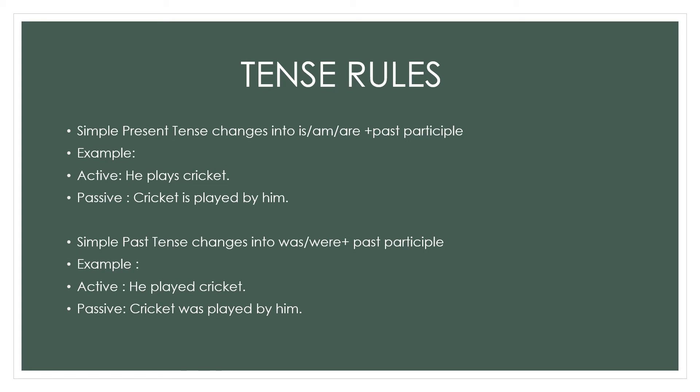Let us take an example: 'He plays cricket.' The word 'plays' tells us it is in simple present tense. When a sentence is in simple present tense, it changes into is/am/are plus the past participle of the verb. So the passive voice becomes: 'Cricket is played by him.'